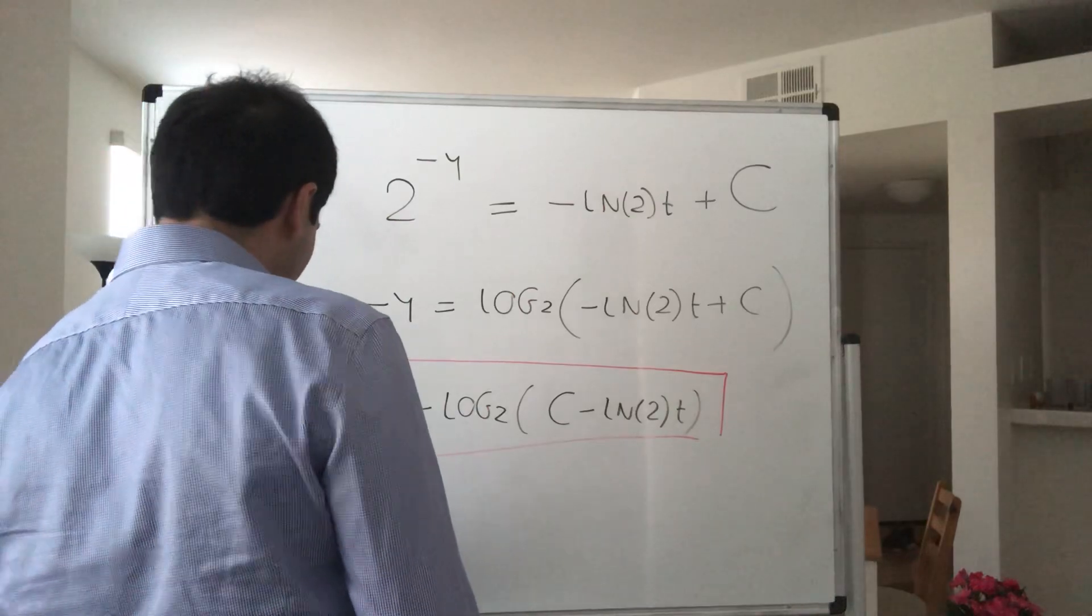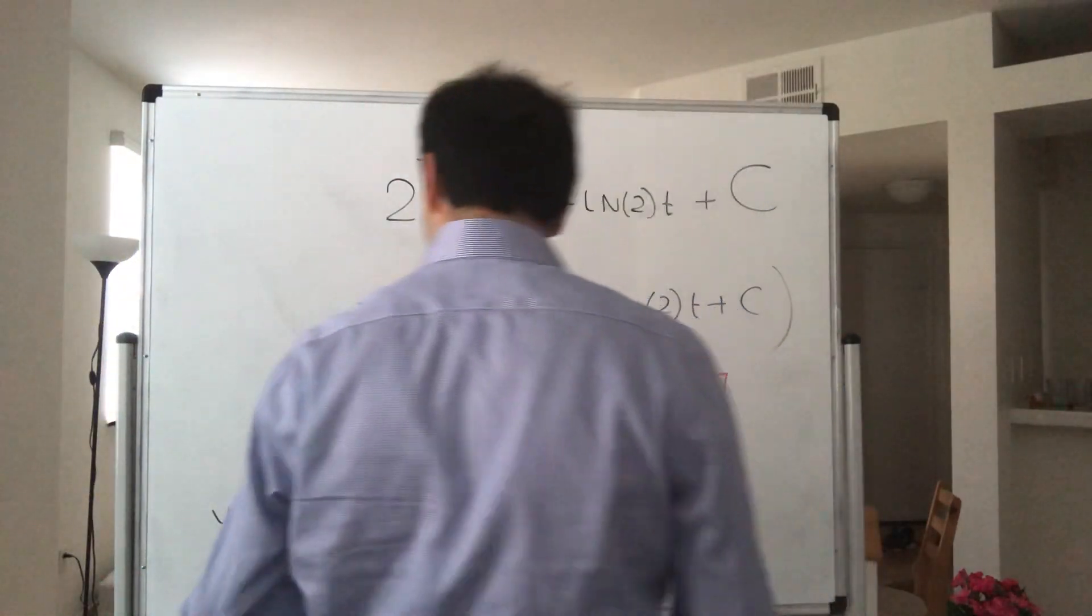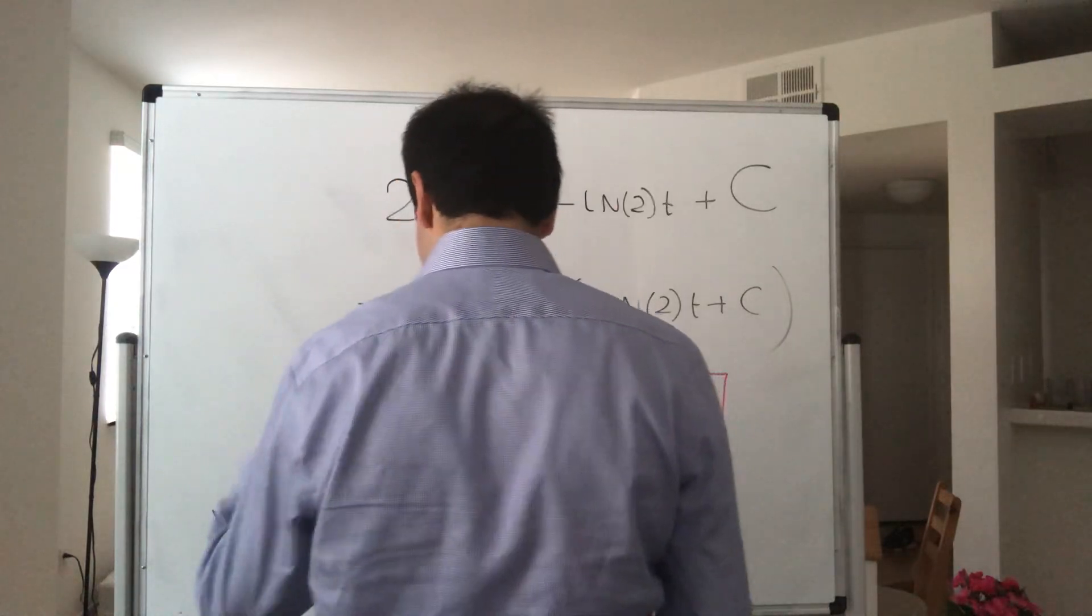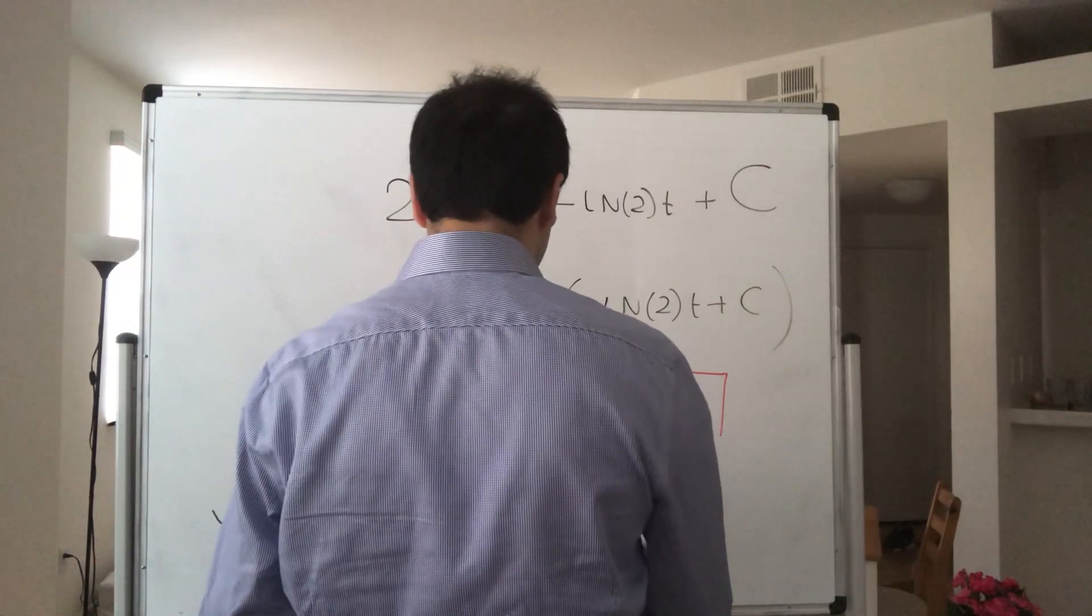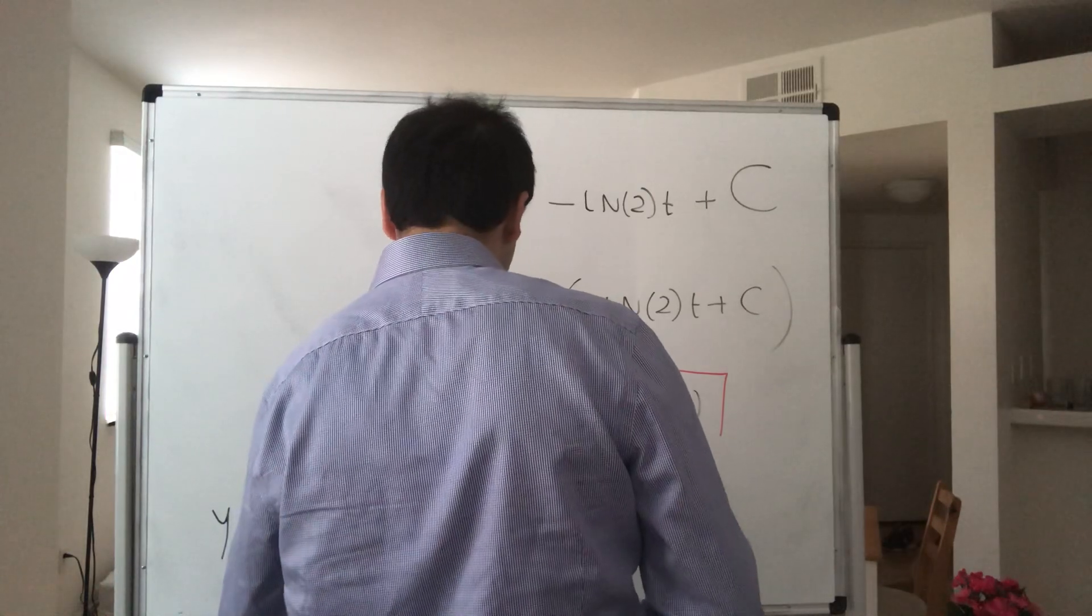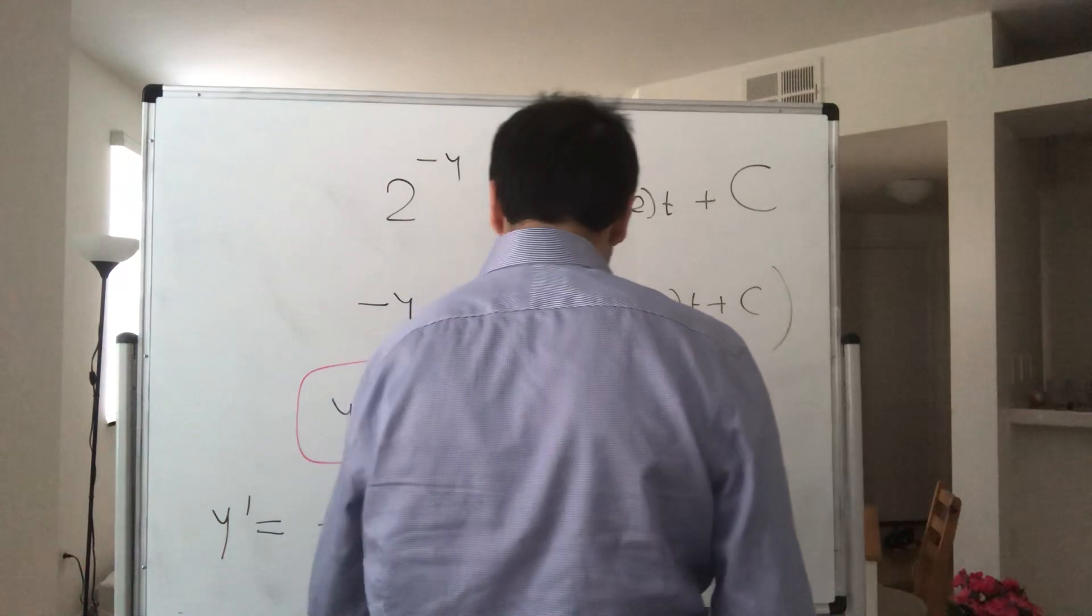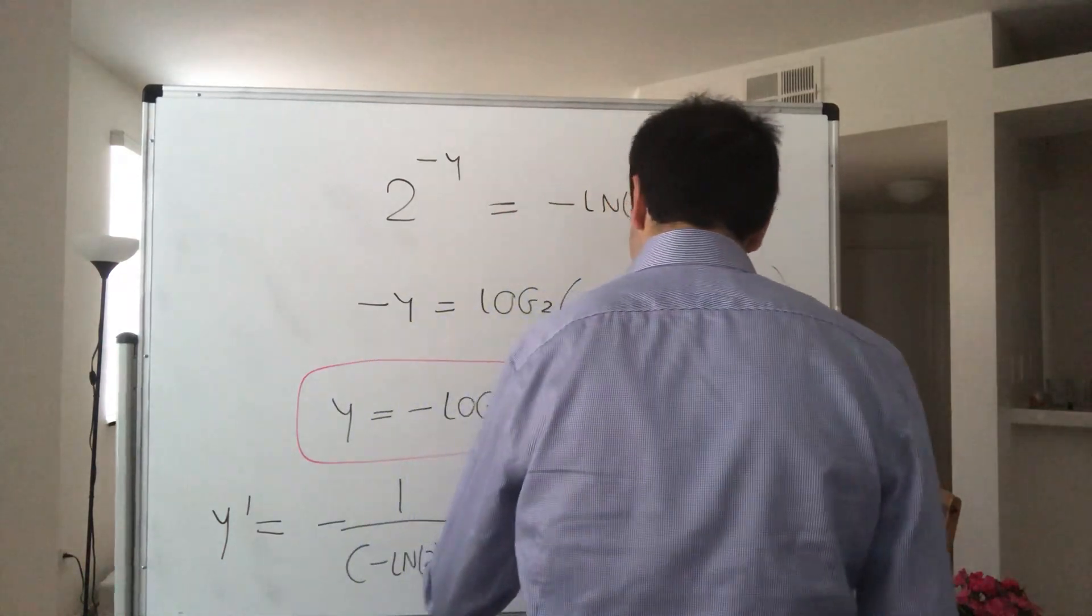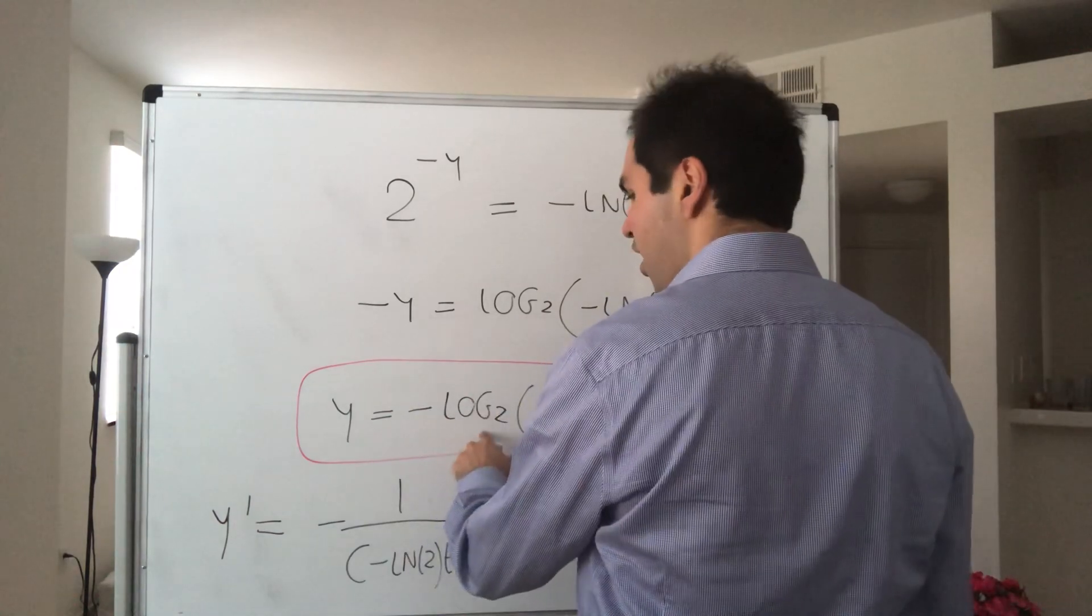So y prime, the derivative of this. Log base two is ln of this over ln of two. So it's minus one over c minus ln of two t, times minus ln of two, but then you divide by ln of two because log base two is ln over ln of two.